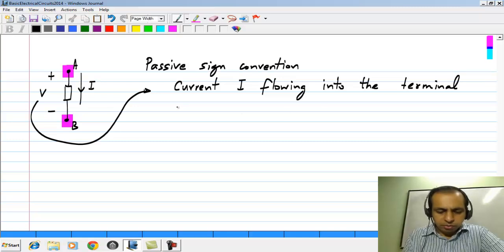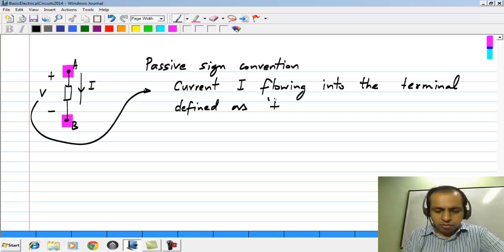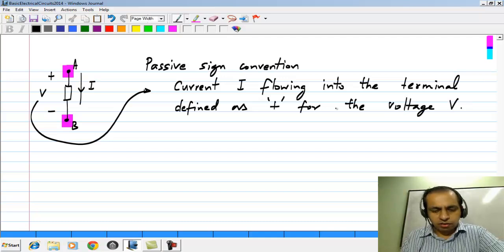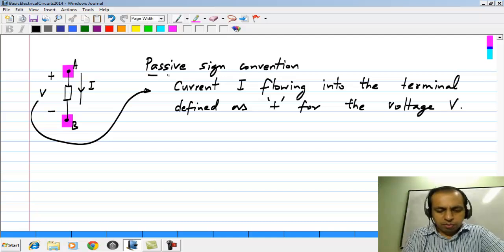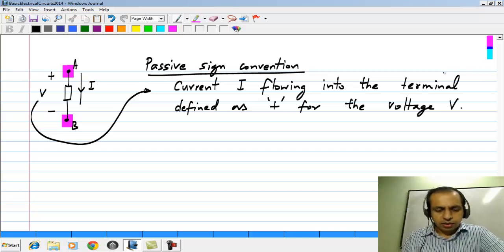Current I is flowing into the terminal defined as plus for the voltage V. We will see later why this is called passive sign convention when we come to power and energy, but this is the convention that we will use.